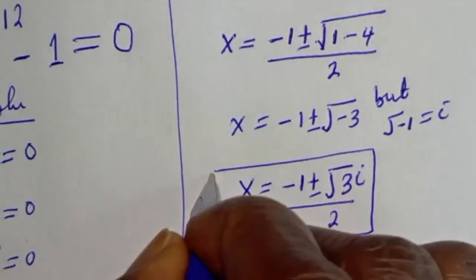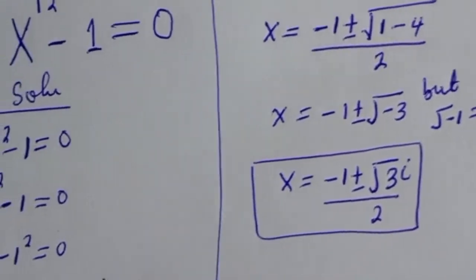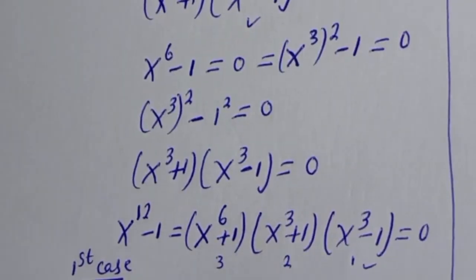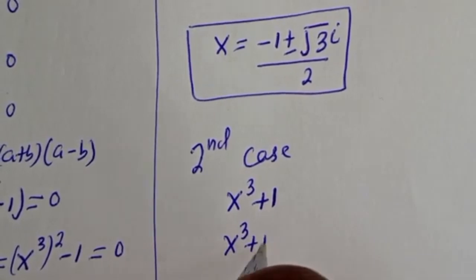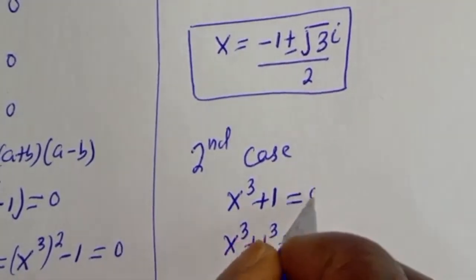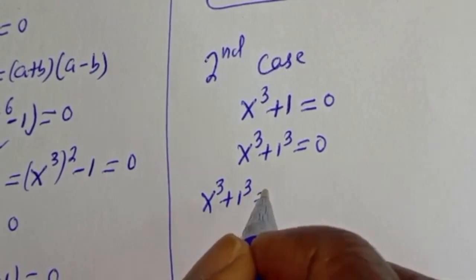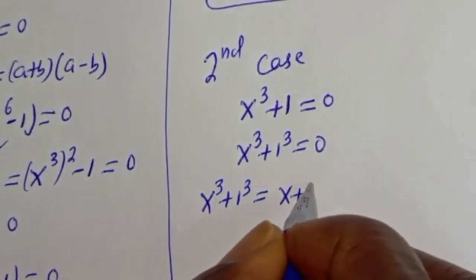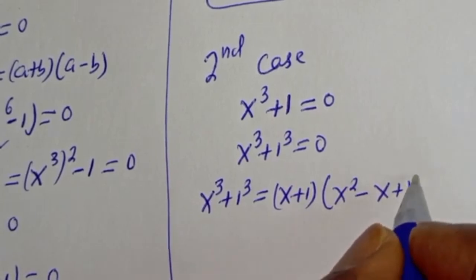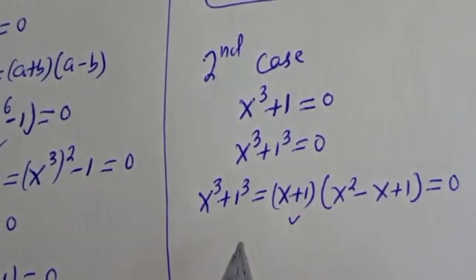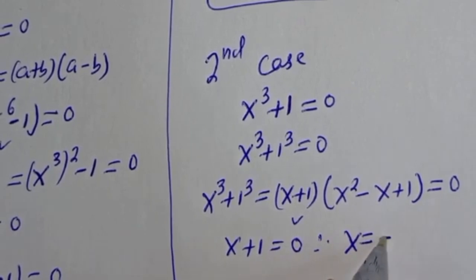That is the value of s from Case 1. Now let's consider Case 2: s raised to power 3 plus 1 is equal to 0. This can be written as s raised to power 3 plus 1 raised to power 3 equal to 0, which factors as s plus 1 bracket s squared minus s plus 1 equal to 0. Therefore s is equal to minus 1.